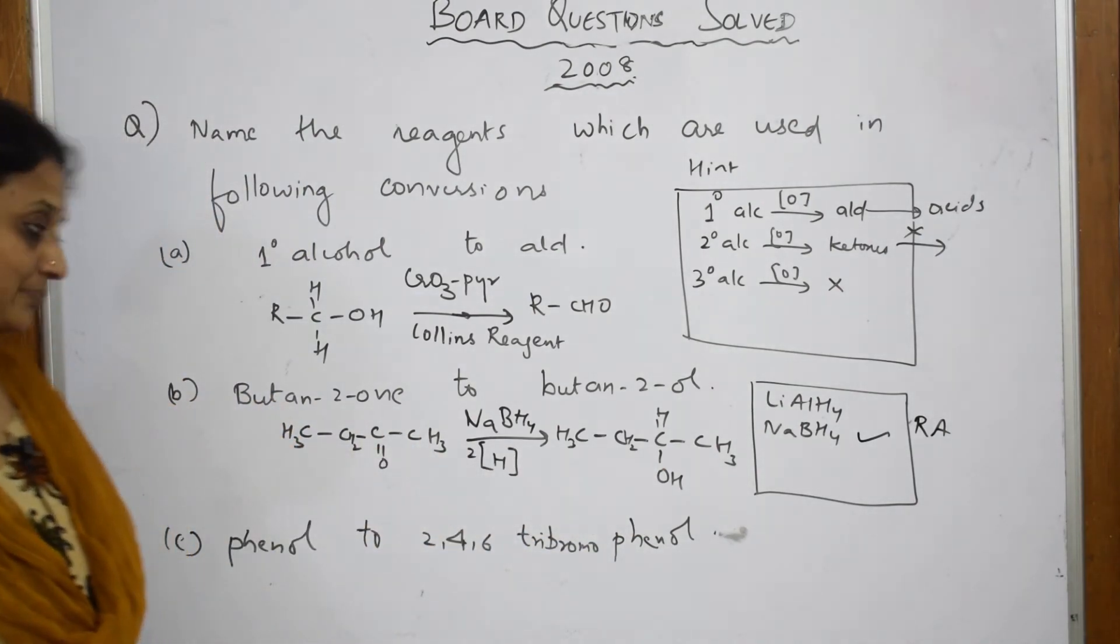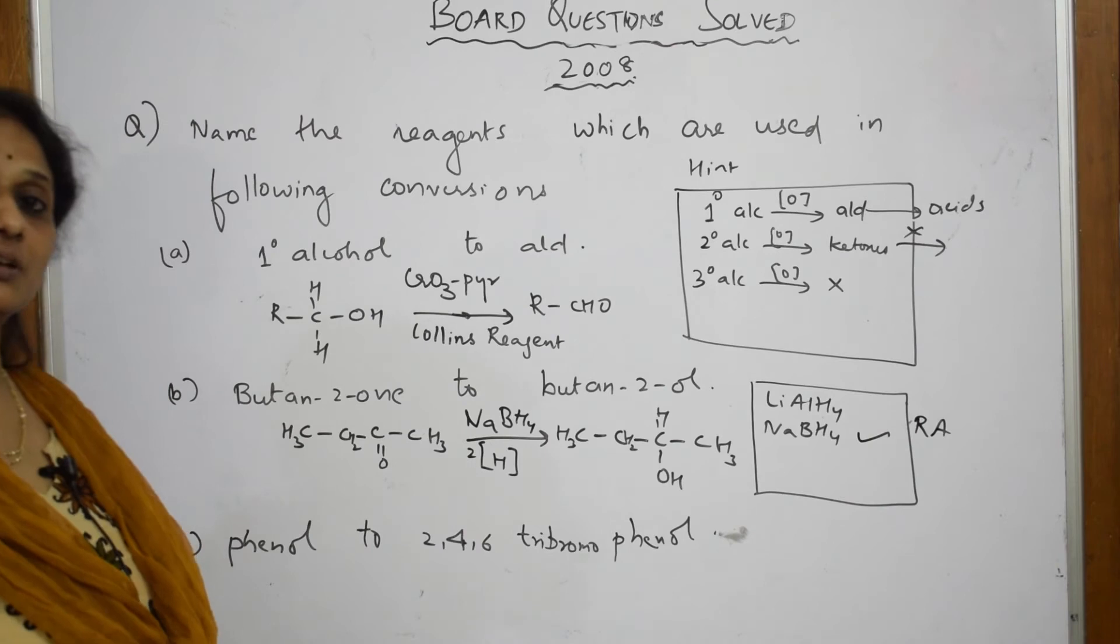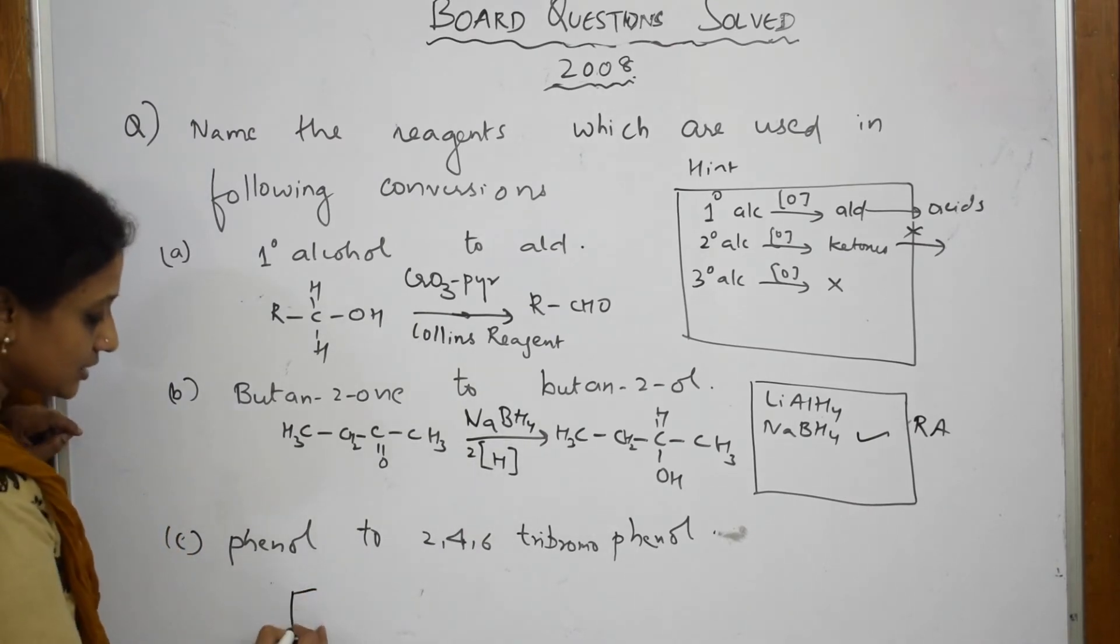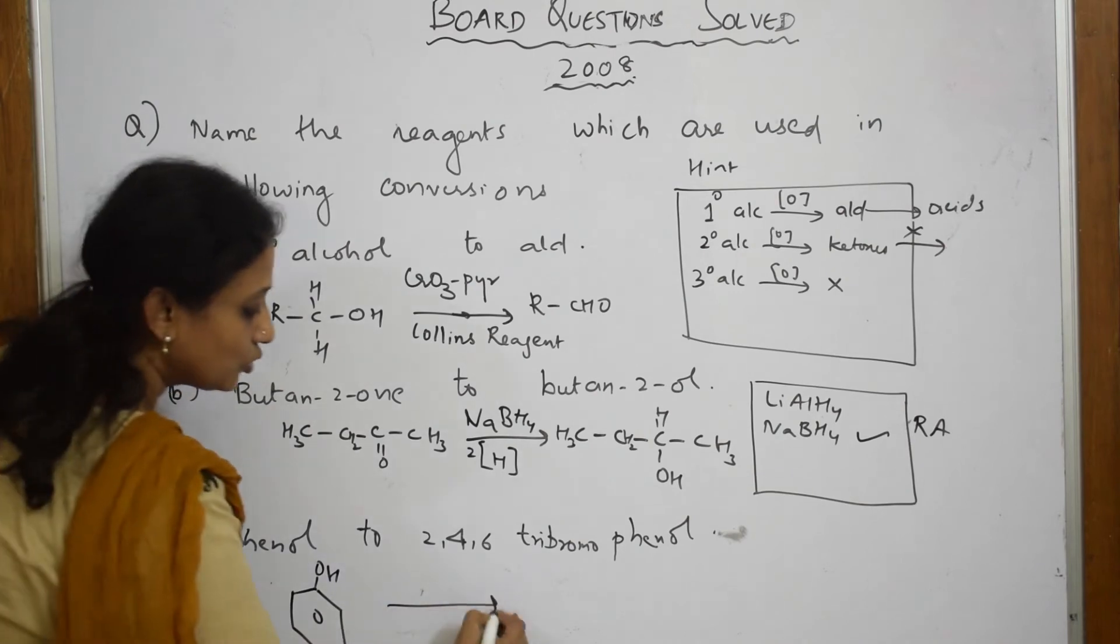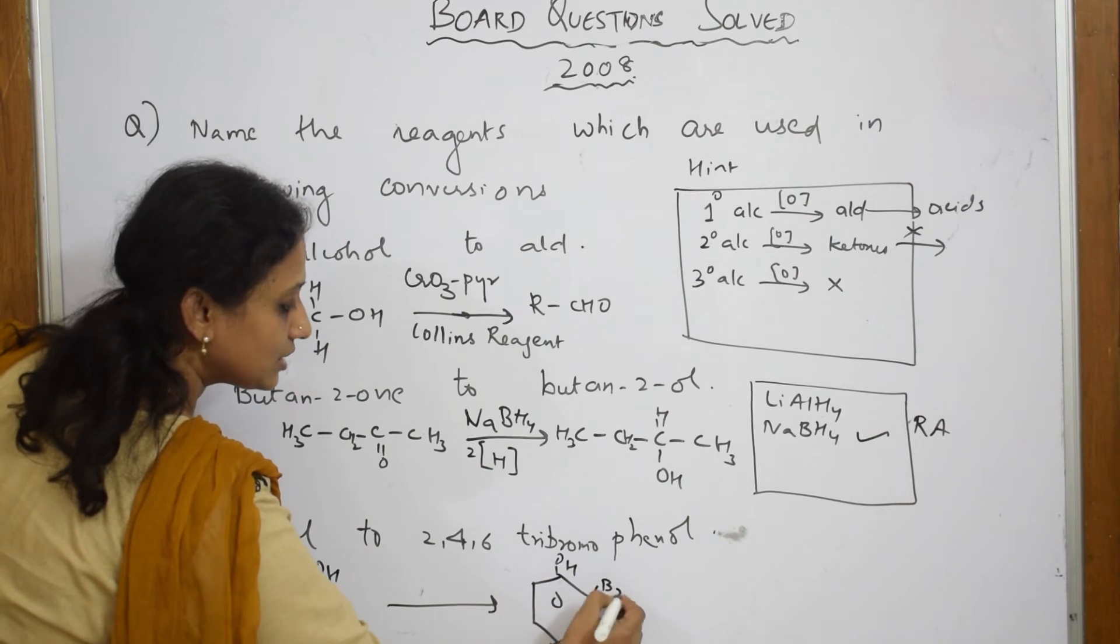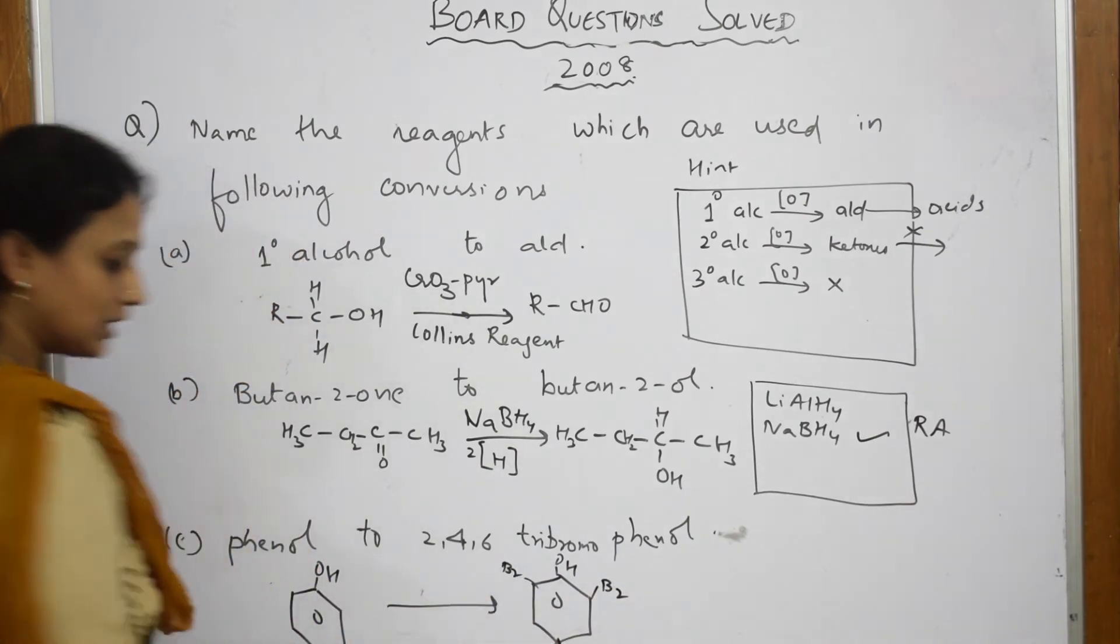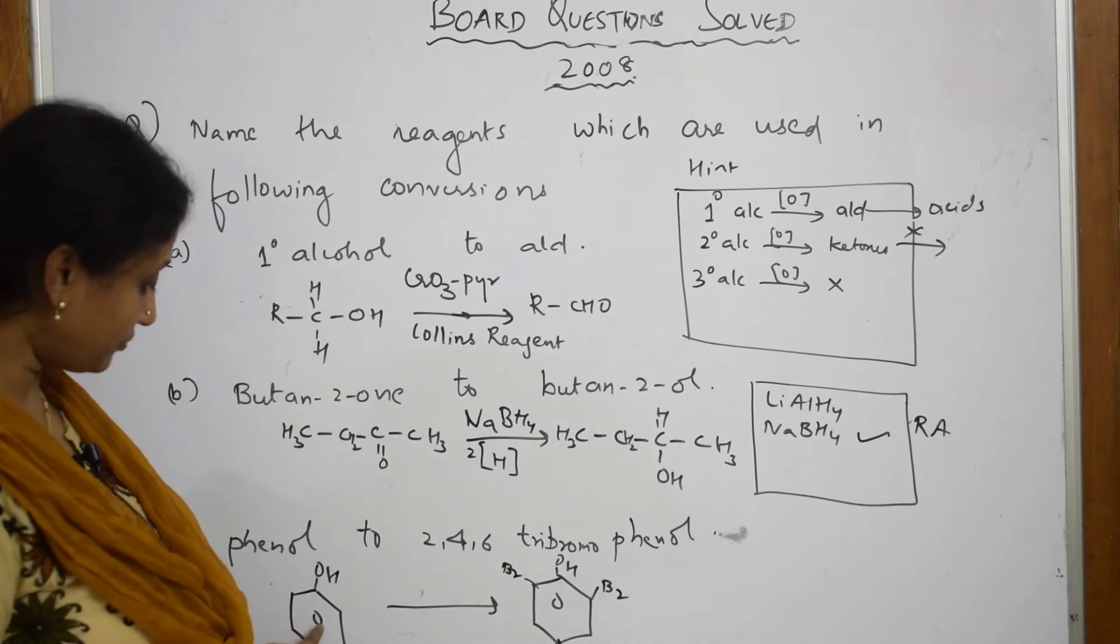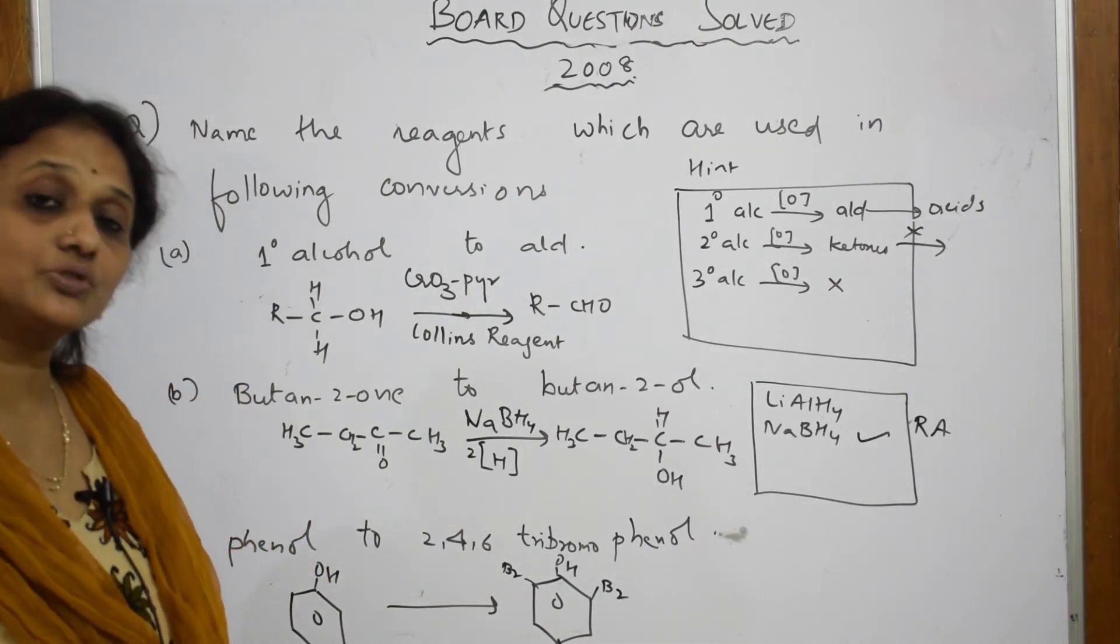Next: phenol to 2,4,6-tribromophenol. They have said your phenol to 2,4,6-tribromophenol - this also we have done. From phenol I did a reaction called bromination reaction. What clue should I remember?